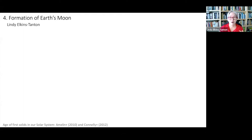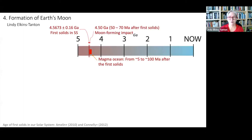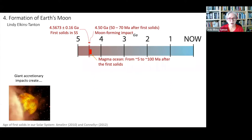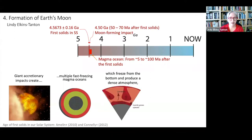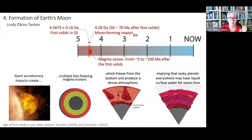Recall where we left the story in the last lecture when we were talking about the time from about five to about a hundred million years after the first solids. Giant accretionary impacts create multiple fast-freezing magma oceans on rocky planets which freeze from the bottom and produce a dense atmosphere as they freeze.